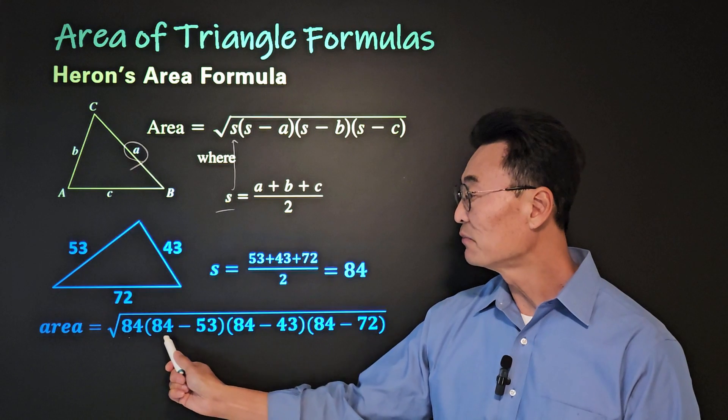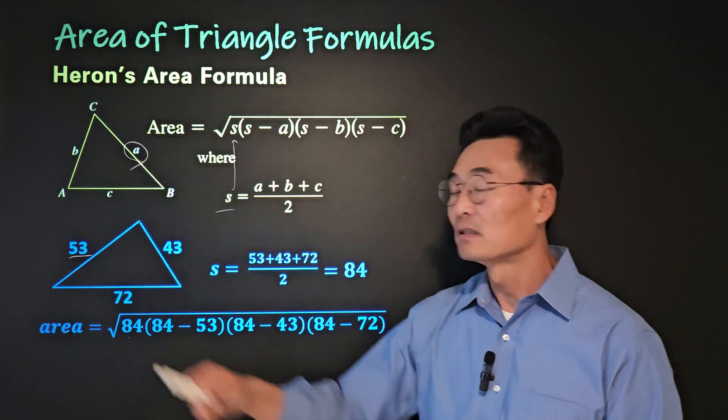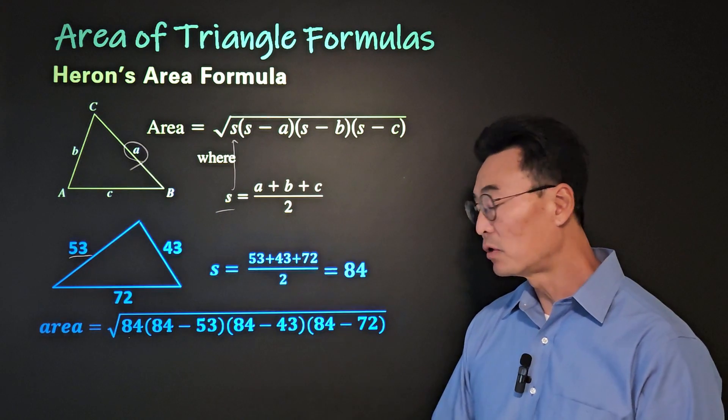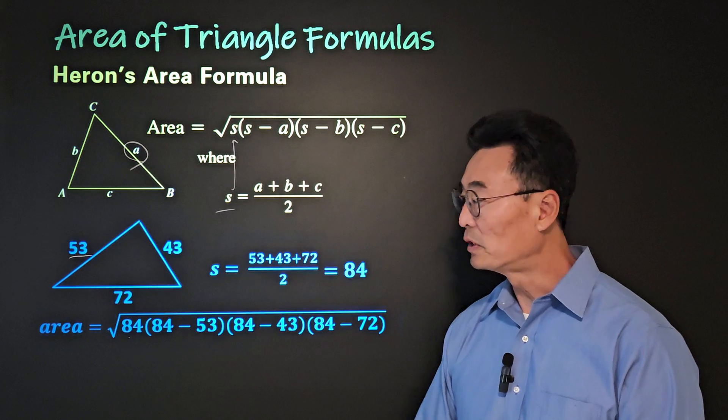Then the area of the triangle will be square root of 84, the value of s that we found, times 84 minus 53, the side of a triangle, times 84 minus 43, times 84 minus 72. Where if you work this out, you'll get 1131.89.